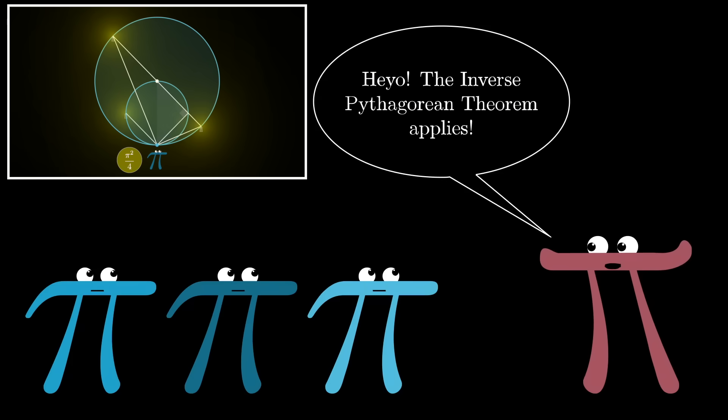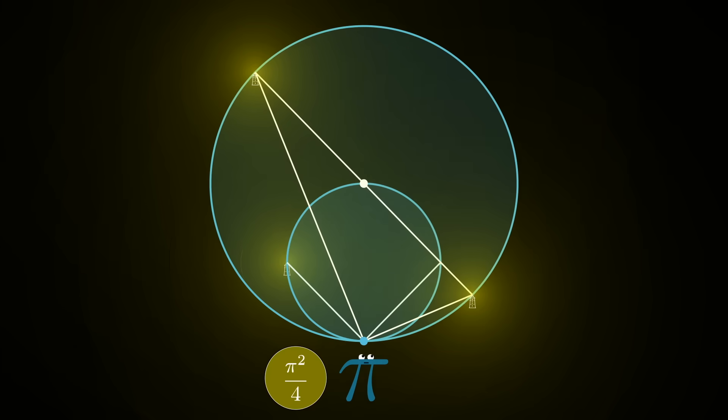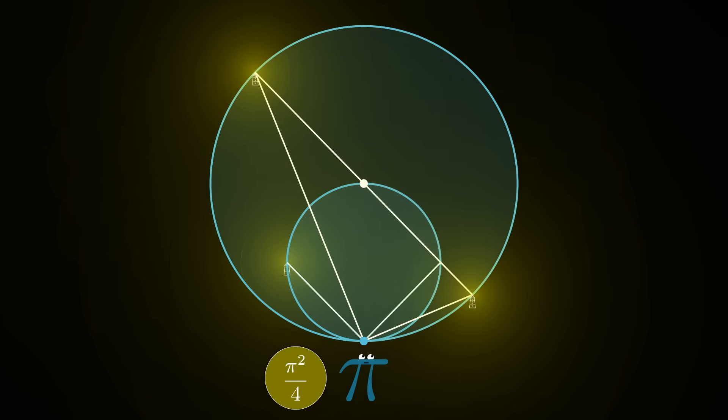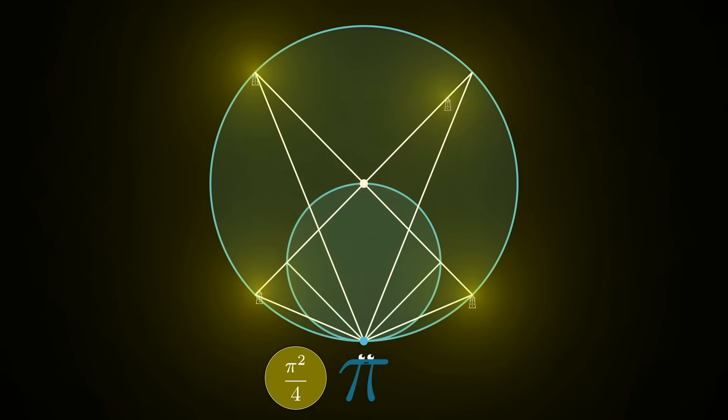Good news, right, because that means we can apply the inverse Pythagorean theorem, and that means that the apparent brightness from the original lighthouse is the same as the combined brightness from the two newer ones. And of course you can do that same thing over on the other side, drawing a line through the top of the smaller circle and getting two new lighthouses on the larger circle.